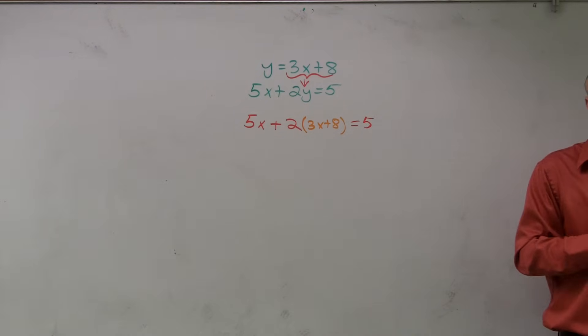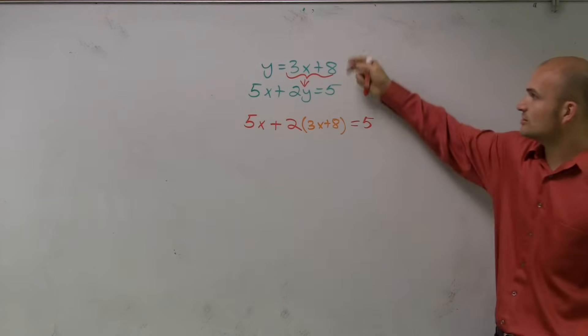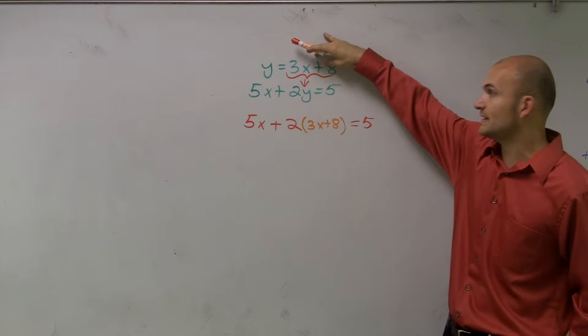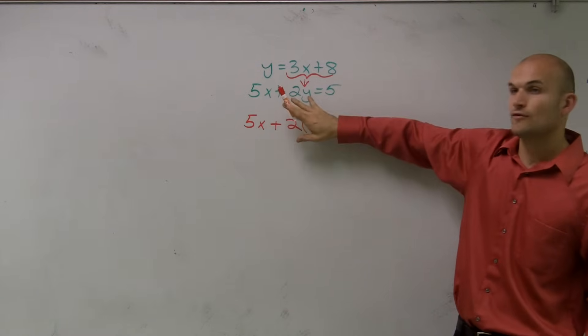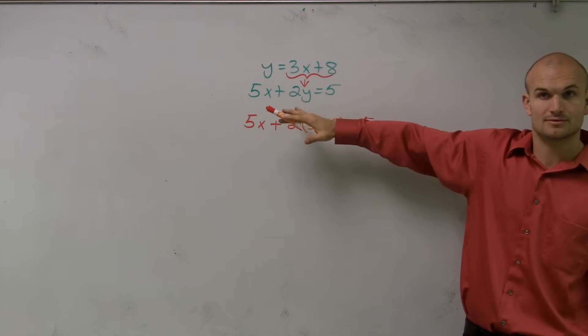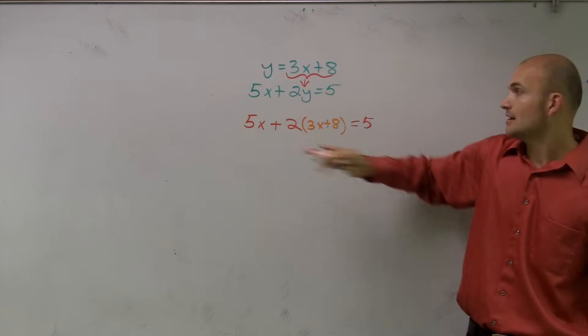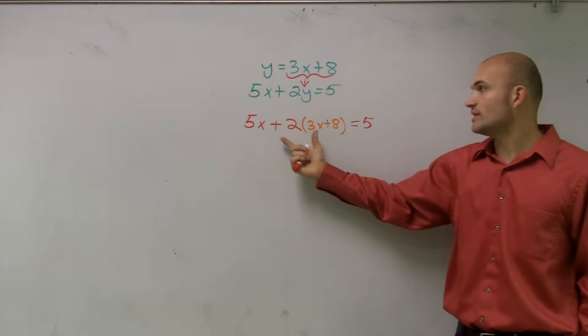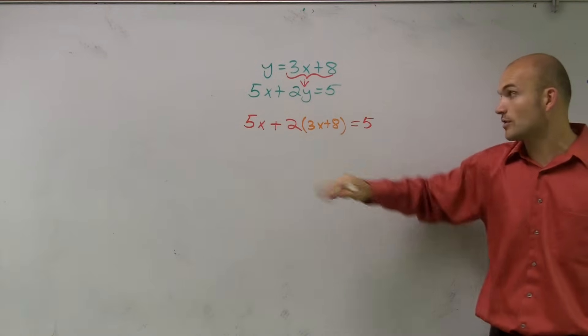So does everybody see what I did? All I simply did is I took the value of my variable, it doesn't matter which variable, and I took that value of it and I substituted it in for the variable in the other equation. So then, once I have that, you can see now I have an equation with the same variable. So now it's going to be something I can solve for.